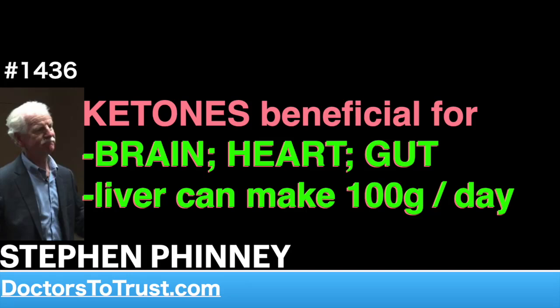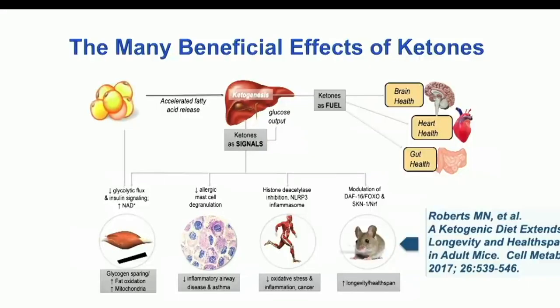Beta-hydroxybutyrate is a four-carbon fatty acid with one extra oxygen added to it. A good microbiome, given a good source of fiber, makes something called butyrate - four carbons, no extra oxygen. They differ by one molecule.